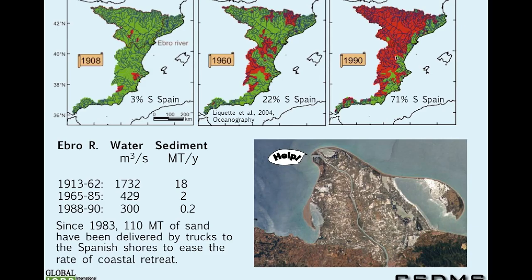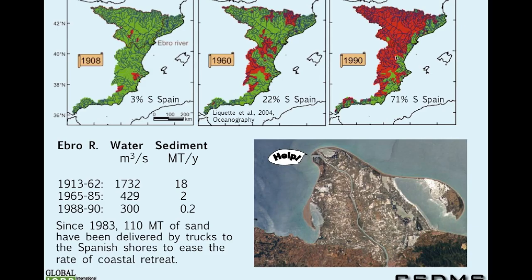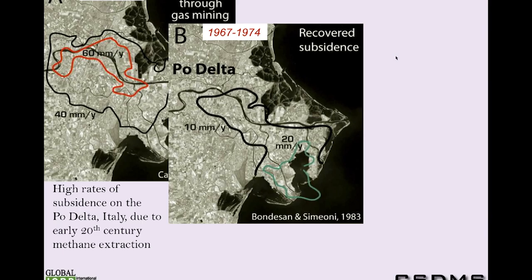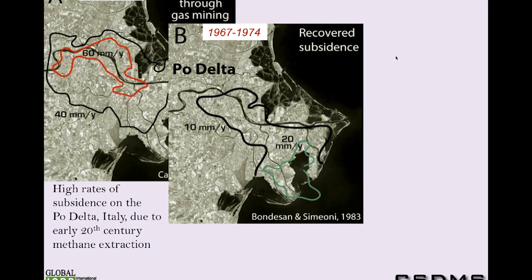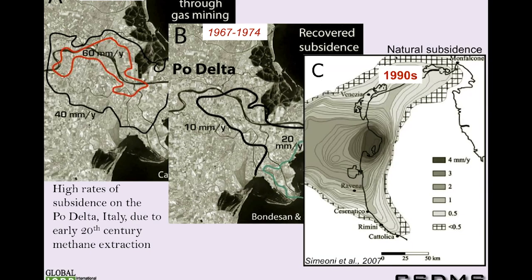Where the river once delivered sediment, we now have trucks — human engineering at its worst. But things can improve. This is a map showing 60 mm/year subsidence on the Po Delta in Italy — just to the north is Venice. Venice was upset, said you're sinking our city — stop it. So they stopped, and it started to recover. A few years later it went from 60 to 20 mm/year. Today the bullseye is around 4 mm/year — about ambient conditions for a delta. If you stop doing something bad, you can at least not make it worse.